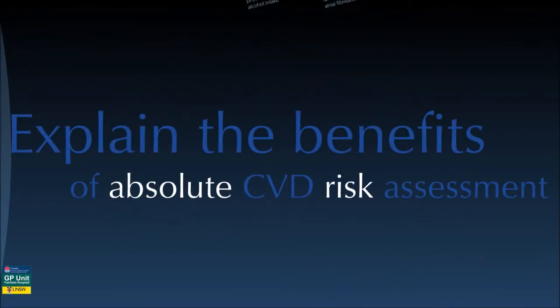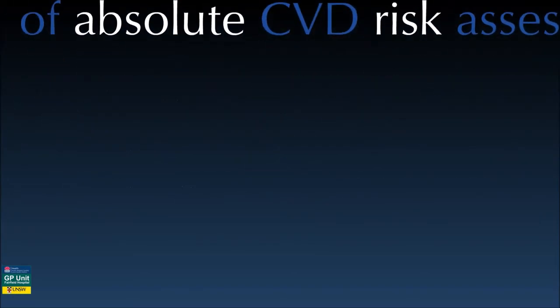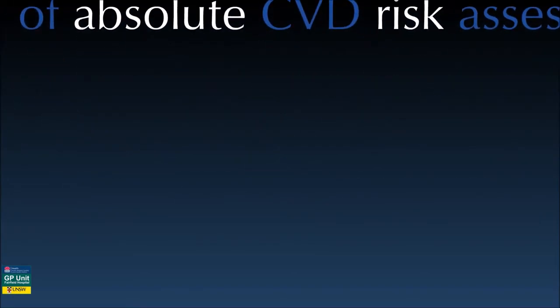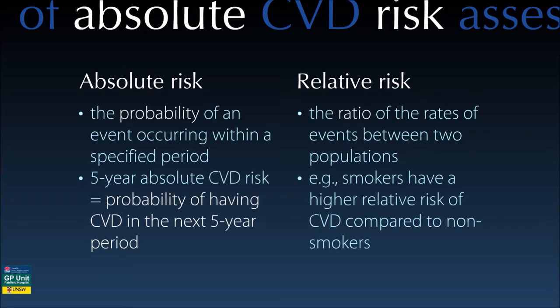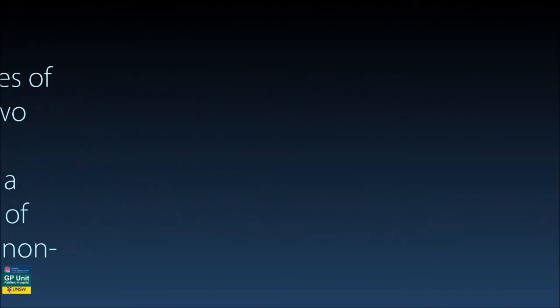We've covered CVD and CVD risks, but what about the term absolute risk? Absolute risk is the probability of something occurring within a specified time frame. For instance, we all have an absolute risk of developing diabetes by age 60. The relative risk is a ratio of the rate of events between two populations — for instance, smokers have a relatively higher risk of cardiovascular disease compared to non-smokers.